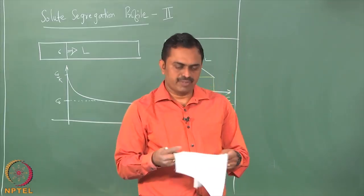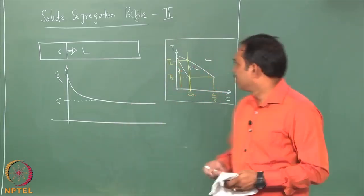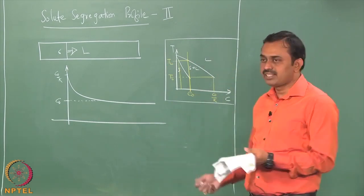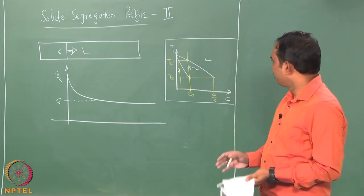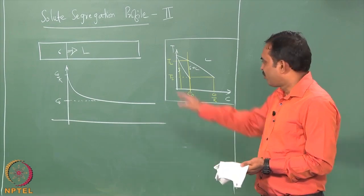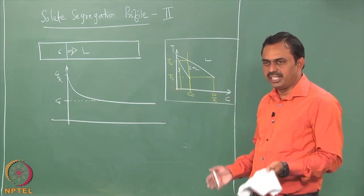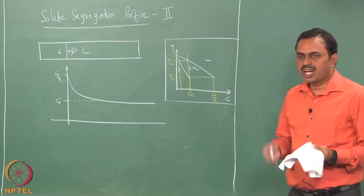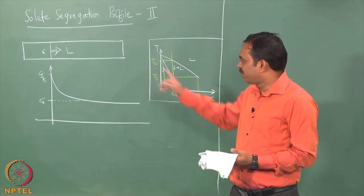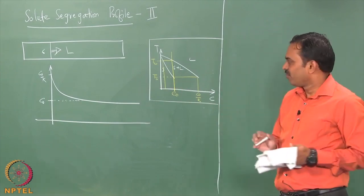Let us resume from where we left off, namely the solute segregation profiles, part two. We are going to look at the equation we derived for this variation, which is exponentially decaying in nature, and then see how it allows us to inspect the kind of microstructure that would be formed in the fusion weldment.